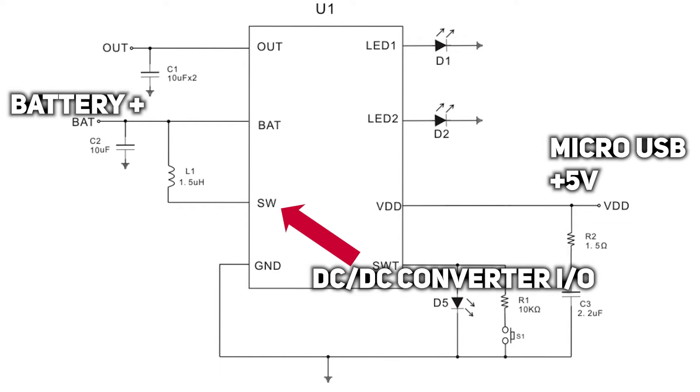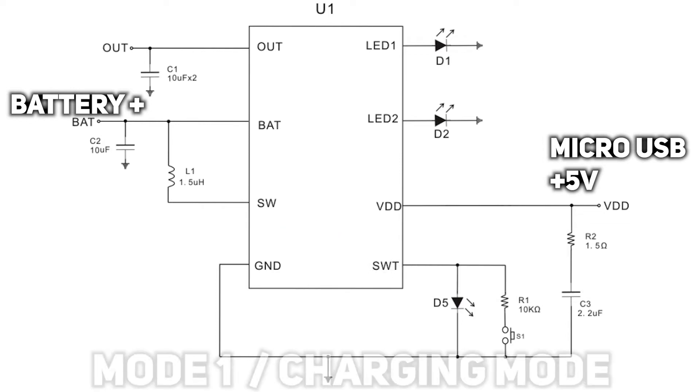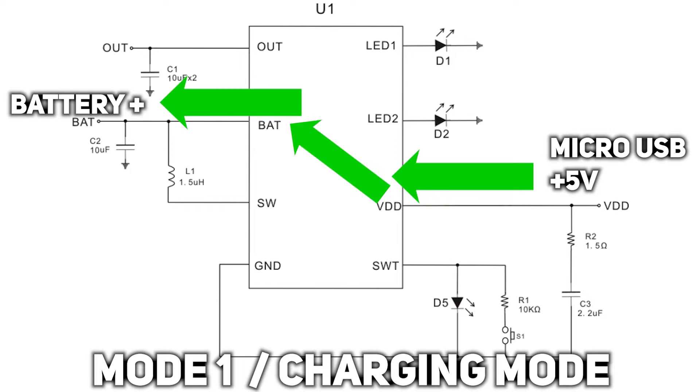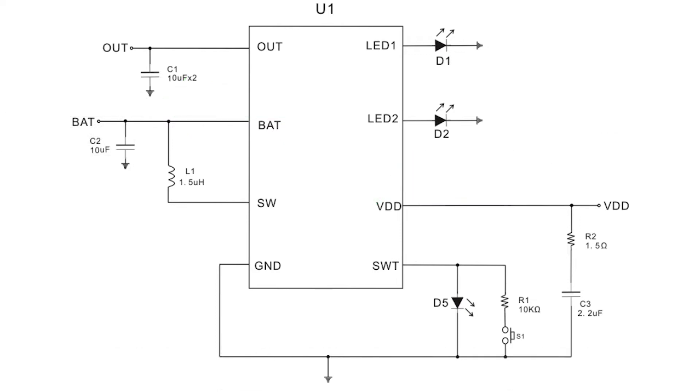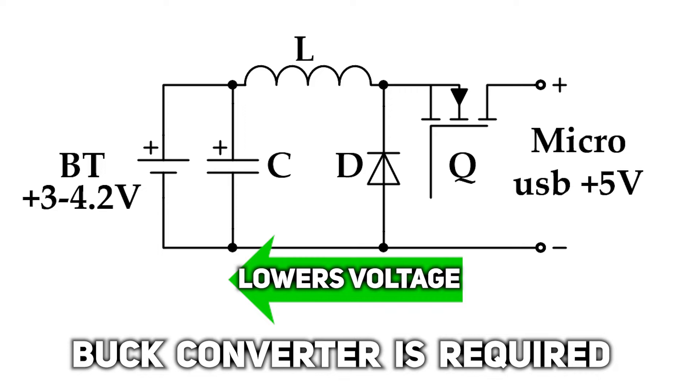It can work in two modes. The first one is charging mode. When the power goes through microUSB, which is 5V, and charges battery, max voltage of which is 4.2V. So, to lower the voltage, buck converter is required. Therefore, inside of this microchip there should be a circuit like that, which can lower the input 5V to battery voltage.